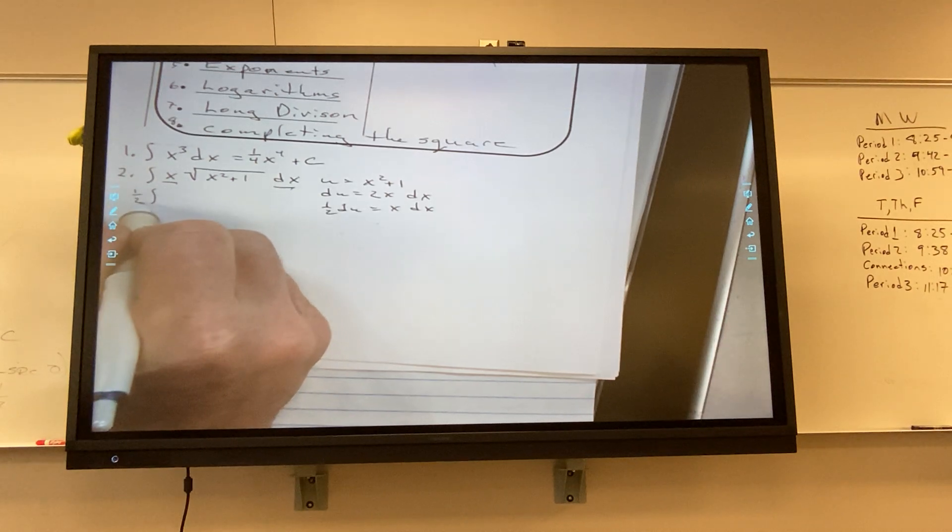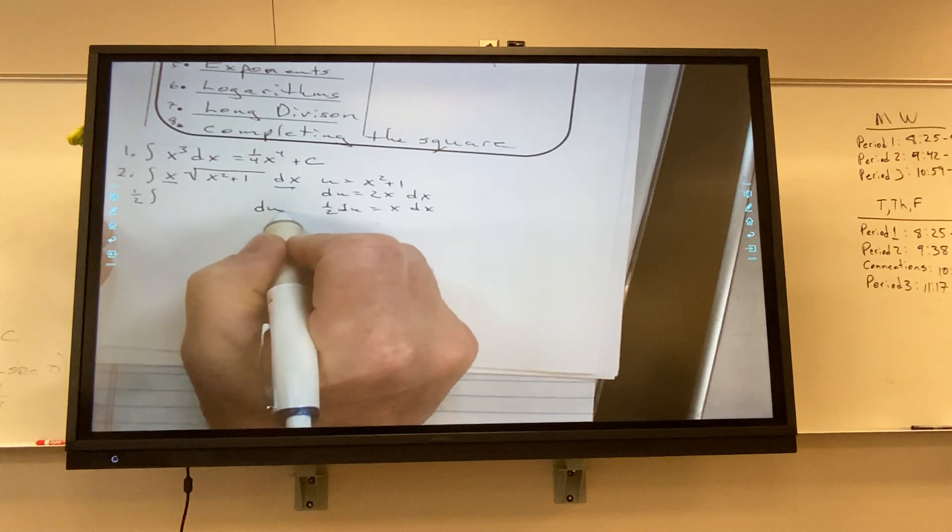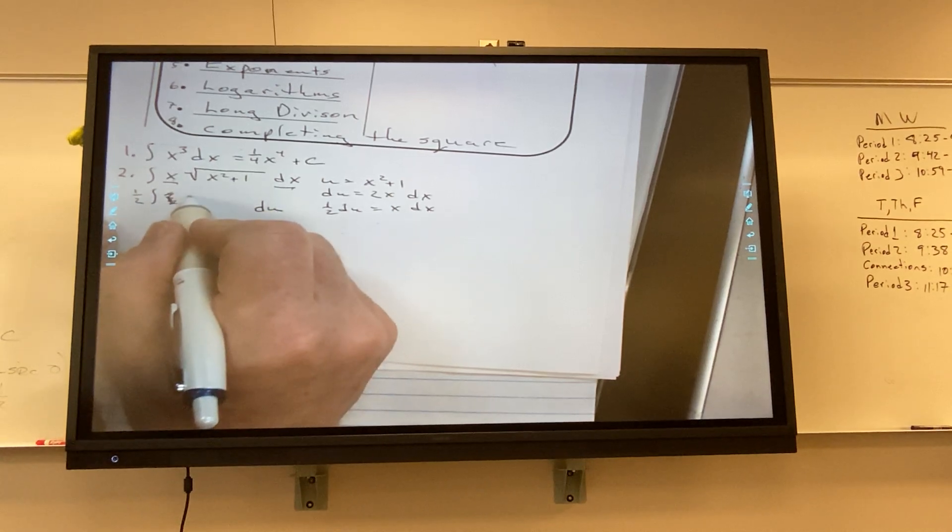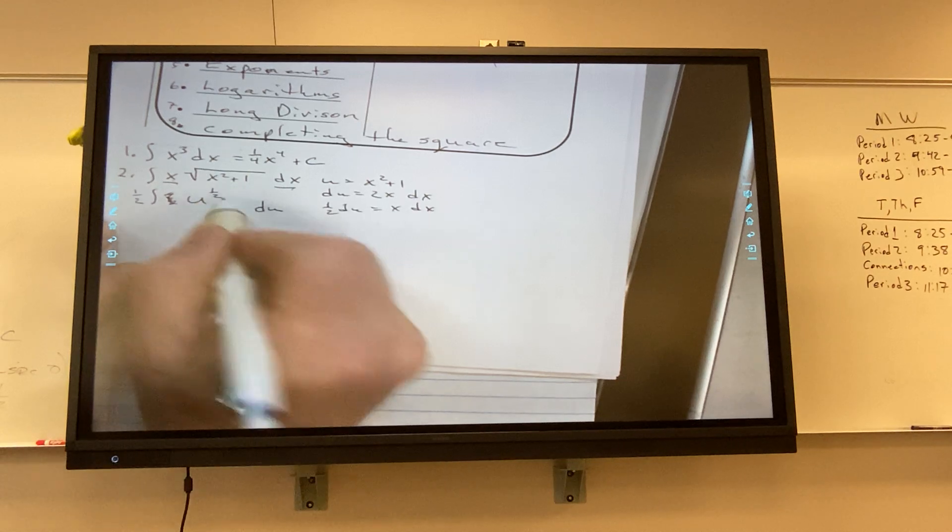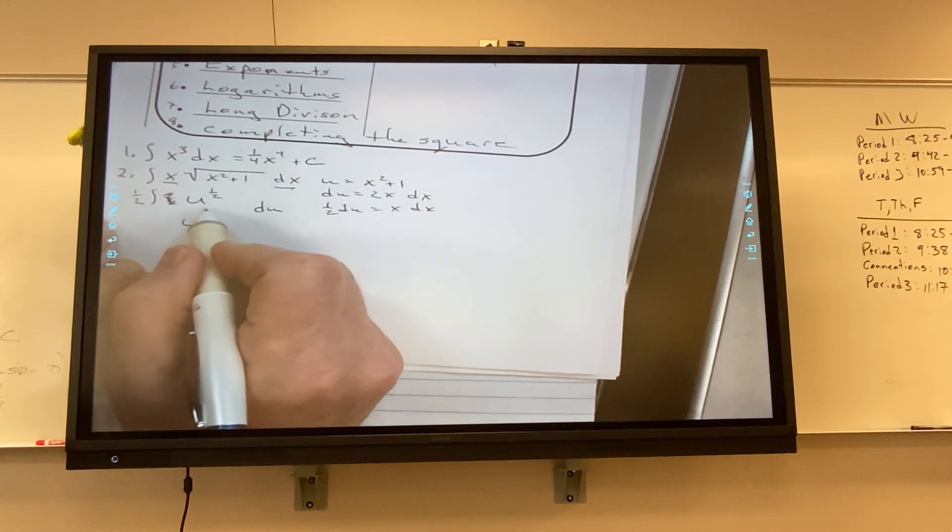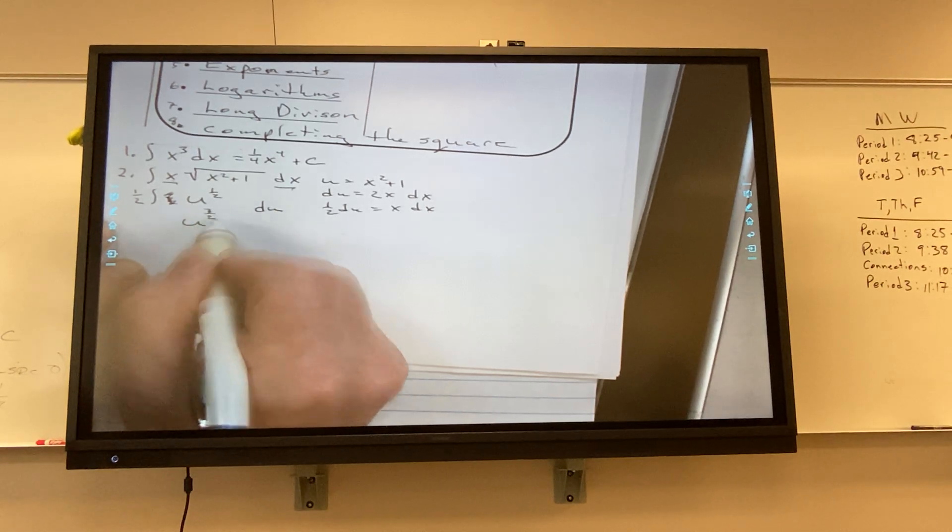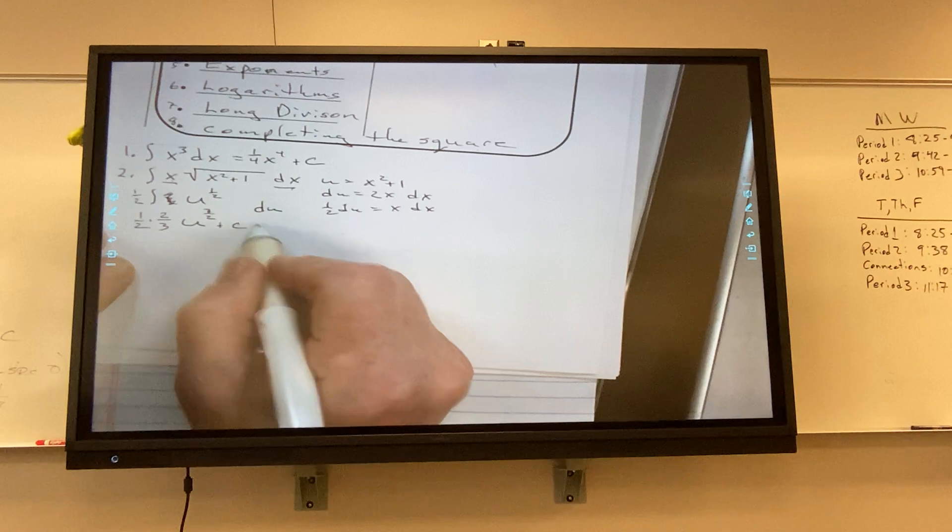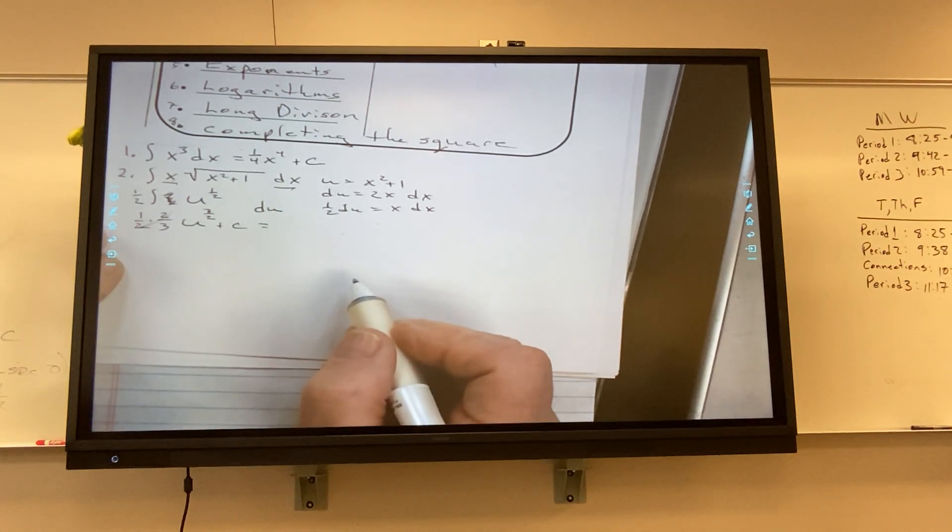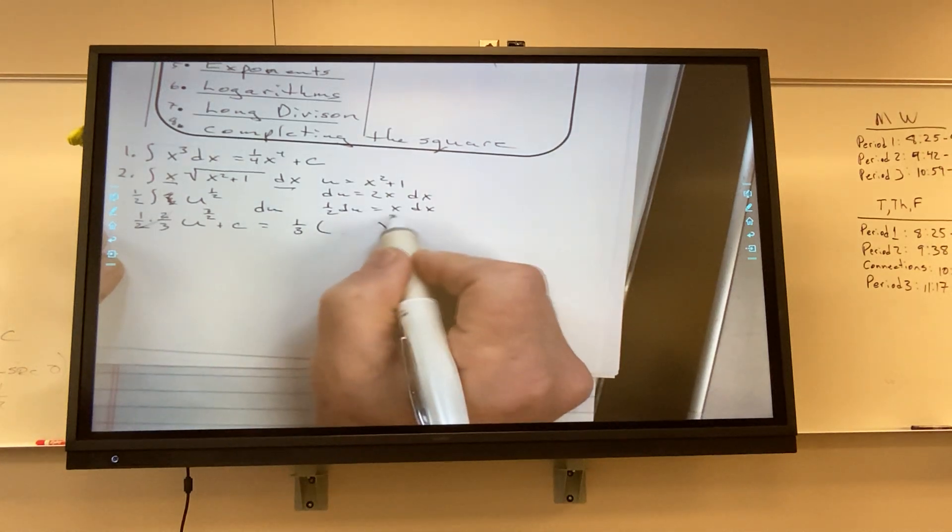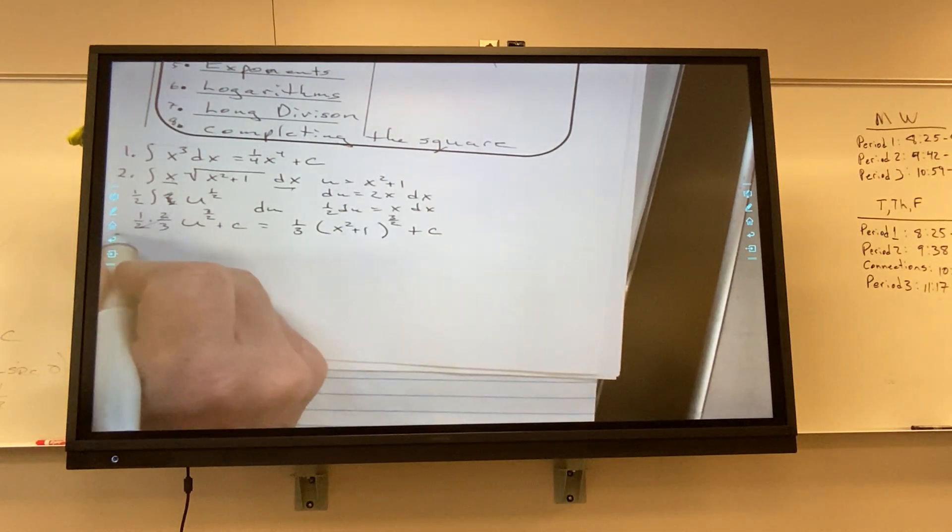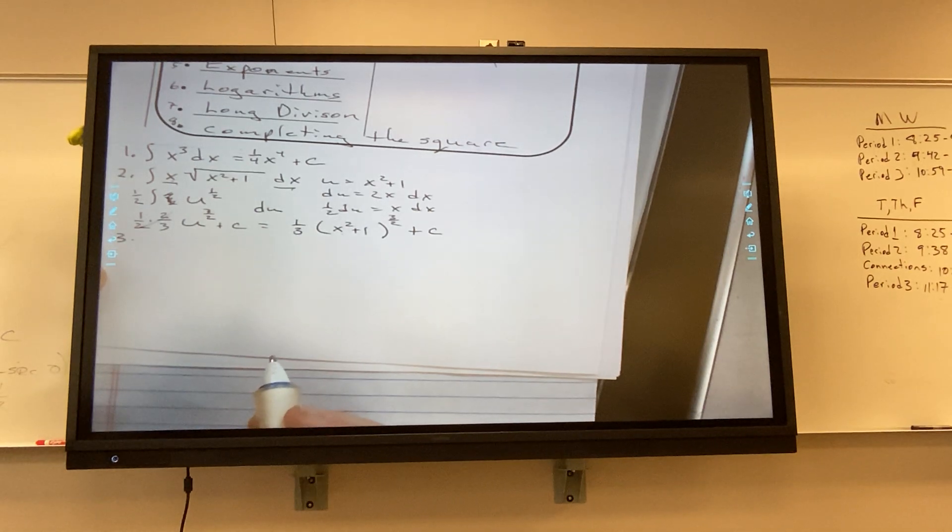So I'm going to rewrite this. Here's my integral and I put the half here and I put the du here. So the x dx is gone. I got parentheses, well I don't have to even need parentheses. So it's going to be u to what power? One half. So I'm going to get u to what power now? Three halves.